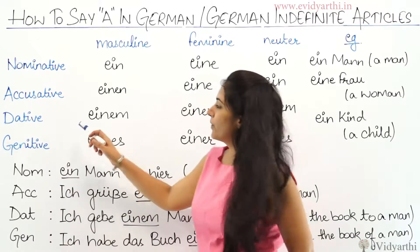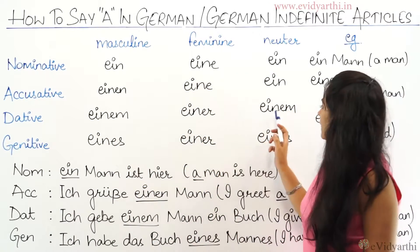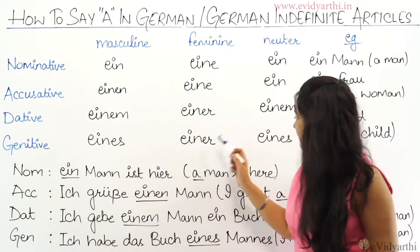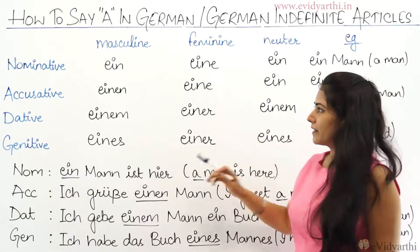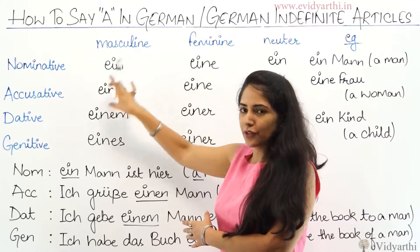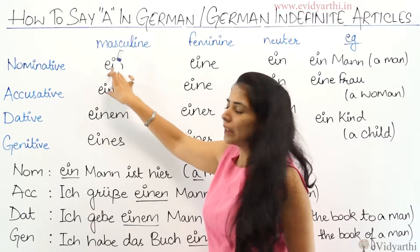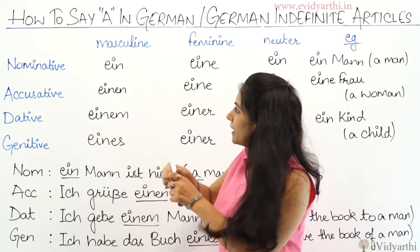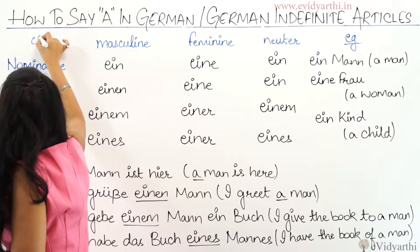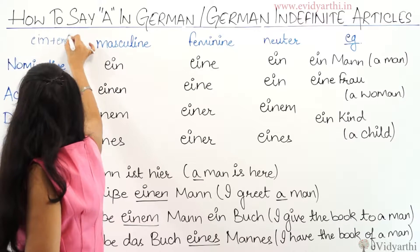Dative forms: 'einem' for masculine, 'einer' for feminine, 'einem' for neuter. Genitive forms: 'eines' for masculine, 'einer' for feminine, 'eines' for neuter. The endings are the same as definite articles but with 'ein' as the base — ein plus the ending.